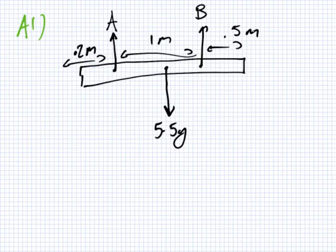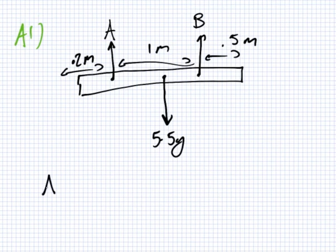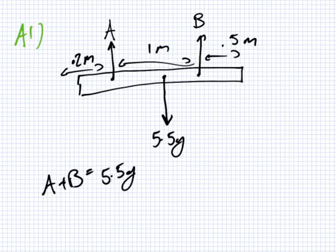And this is so basic. It's so basic. And this is your usual up equals down. A plus B equals 5.5G. And then the turning force.